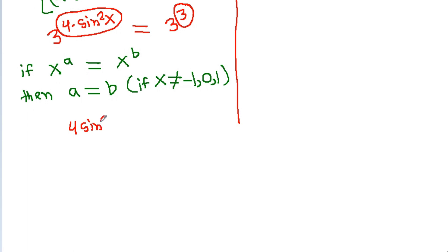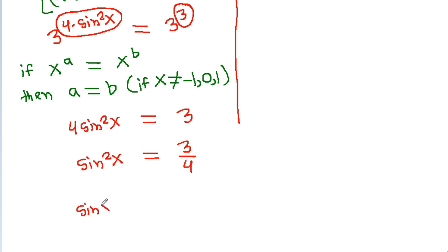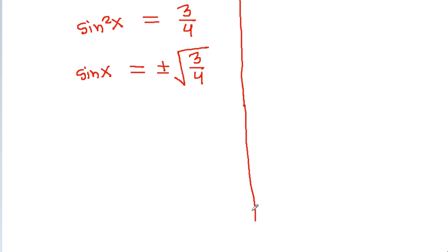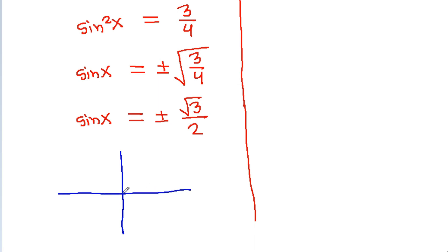So sin squared x equals 3 by 4, and sin x equals plus or minus square root of 3 by 4, which gives sin x equals plus or minus square root 3 by 2, at an angle of pi by 3.